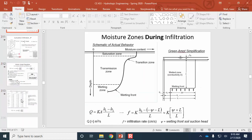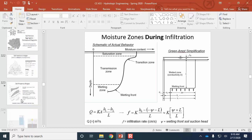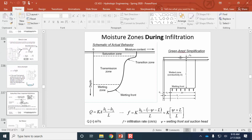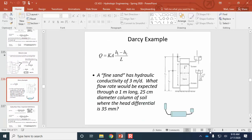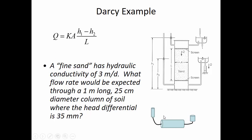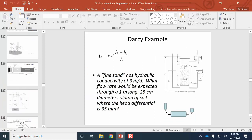Briefly, Darcy's Law can be illustrated with a column of soil packed in a pipe connected to reservoirs at different elevations. The cross-sectional area is where water flows through, and h1 versus h2 are the upstream and downstream water heights. Delta h is the driving force — the difference in head pushing water through the length of the column.